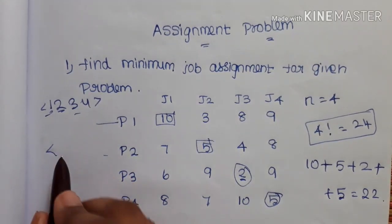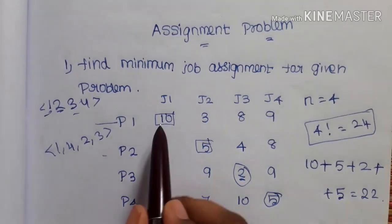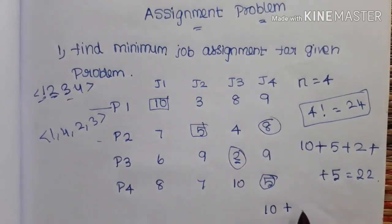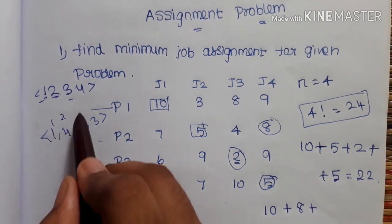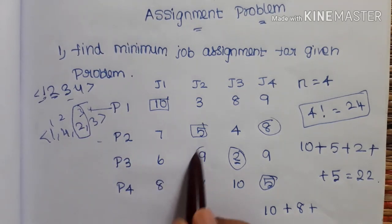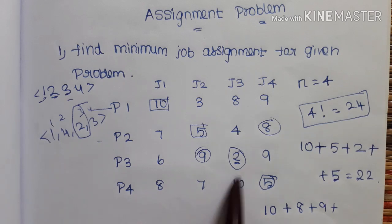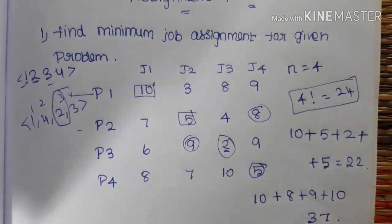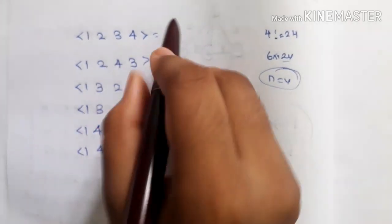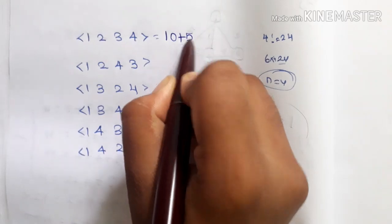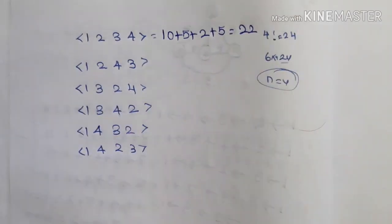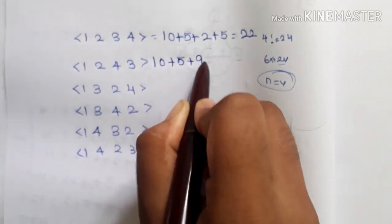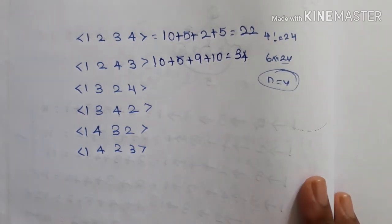Next example: 1, 4, 2, 3. First place is 10, second is 4, second value is 8. Third is 1, 2, 3, 4, so third role second is number 9. And fourth role third is number 10. So 10 plus 5 plus 9 plus 10 is equal to 34.